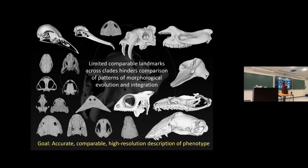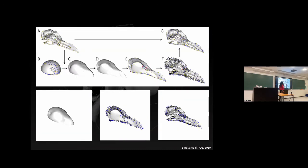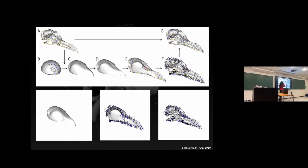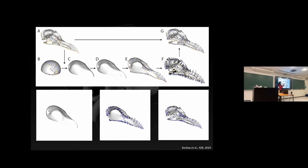It's not just that 12 is an underwhelming number — those landmarks leave out so much variation and basically ignore the most interesting features of the skull. Our goal is to come up with an accurate, comparable, high-resolution description of phenotype applicable to the breadth of our dataset. The solution we came up with is a surface semi-landmark approach: we place type 1 and type 2 landmarks where we can consistently place them, then use semi-landmarks to define different cranial regions — mainly individual cranial bones — and project surface semi-landmarks from a template onto each specimen.